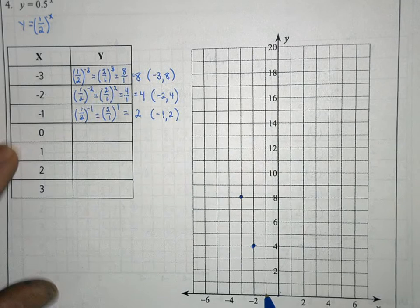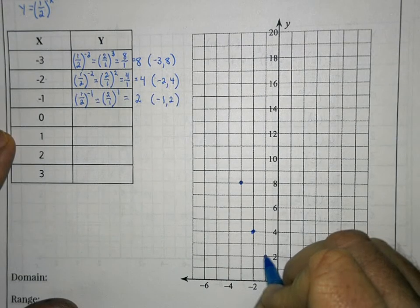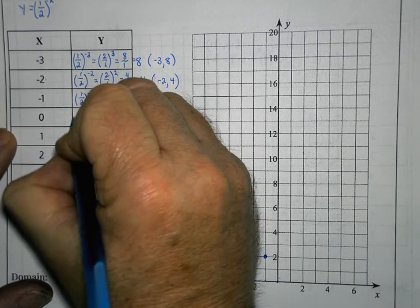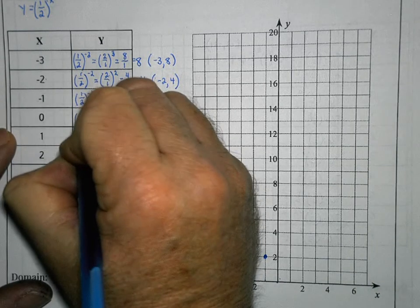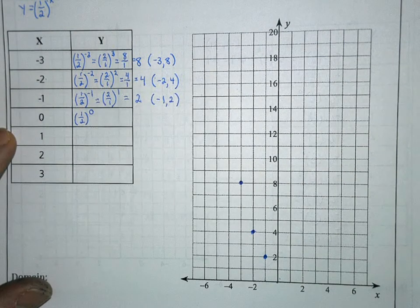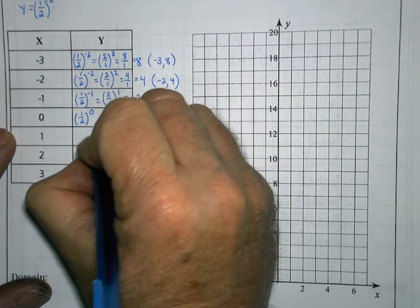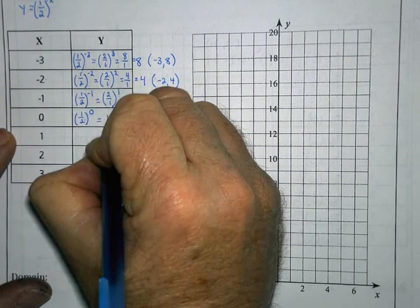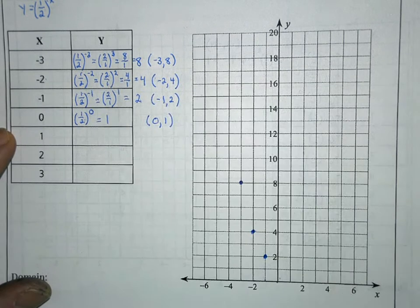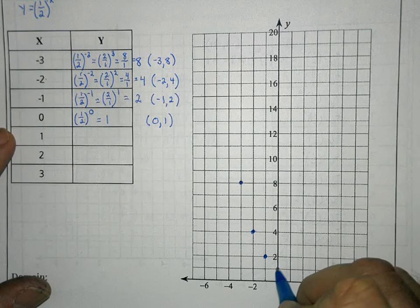Plotting that, I go to negative 1 on the x-axis and up to positive 2 on the y-axis for my third point. Continuing, I substitute 0 for x, giving me one-half to the 0 power. Any expression to the 0 power equals 1, so when x is 0, y equals 1. I plot that by going up on the y-axis to 1.